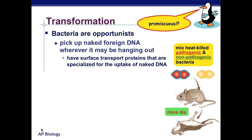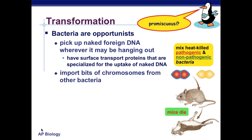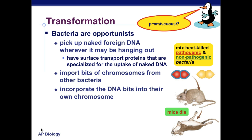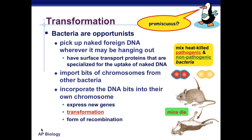Bacteria are able to do this because they have surface transport proteins that are specialized for taking up naked DNA. The bacteria imports bits of the chromosome from other bacteria and incorporates those bits into its very own chromosome. When it expresses its new genes, it's called transformation — it forms a recombination of its original DNA with the new DNA that it has acquired.